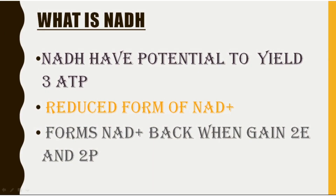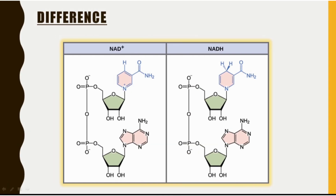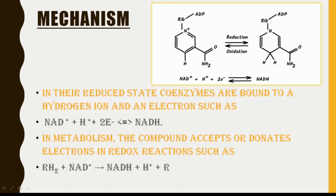To understand the mechanism of NADH, we need to study the structure and function of NADH. NADH is a reduced form of NAD+, and it has the potential to yield three ATPs. It is formed when NAD+ gains two electrons and two protons. The only difference between both molecules is that NADH has one more hydrogen than NAD+, and it has broken its double bond to gain that hydrogen. Coming to the mechanism of NAD+ and NADH — NAD+ reduces to form NADH, and NADH oxidizes to form NAD+. You can see in the equation that NAD+ has gained two electrons and a hydrogen ion to form NADH.